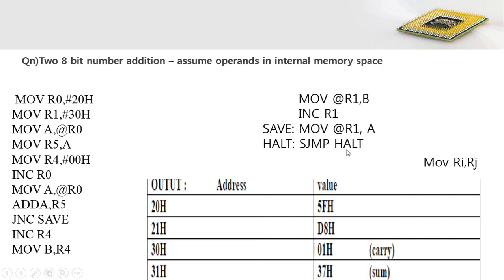This instruction indicates a short jump to the label named 'halt'. The halt label refers to this particular instruction itself, meaning while executing, it will loop on this last statement continuously. This indicates the stop of program execution.